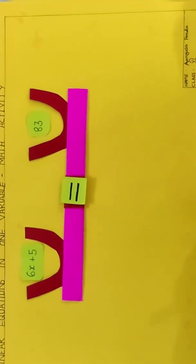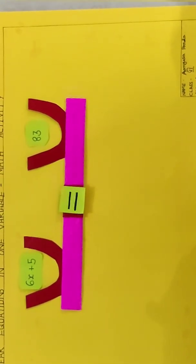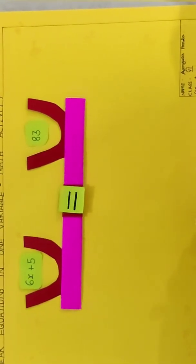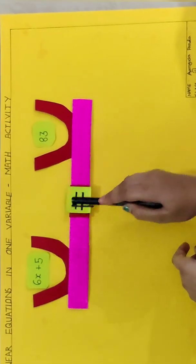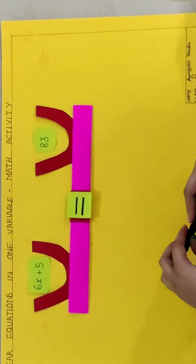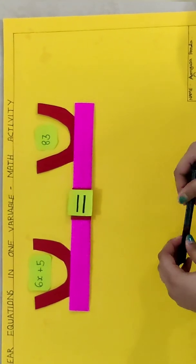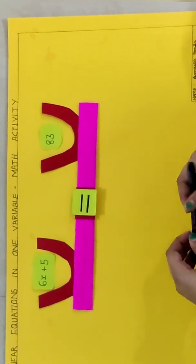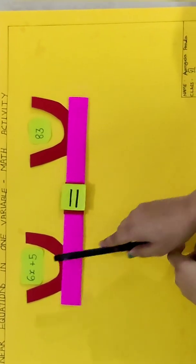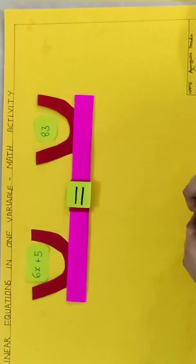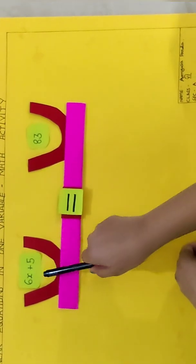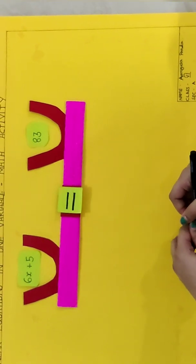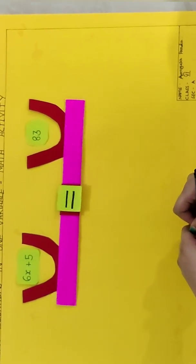So now we are going to take an example that is 6x plus 5 equals 83. So in a linear equation, there are some known quantities and some unknown quantities. So 6, 5 and 83 are the known quantities and x is an unknown quantity. So we have to get the value of x.